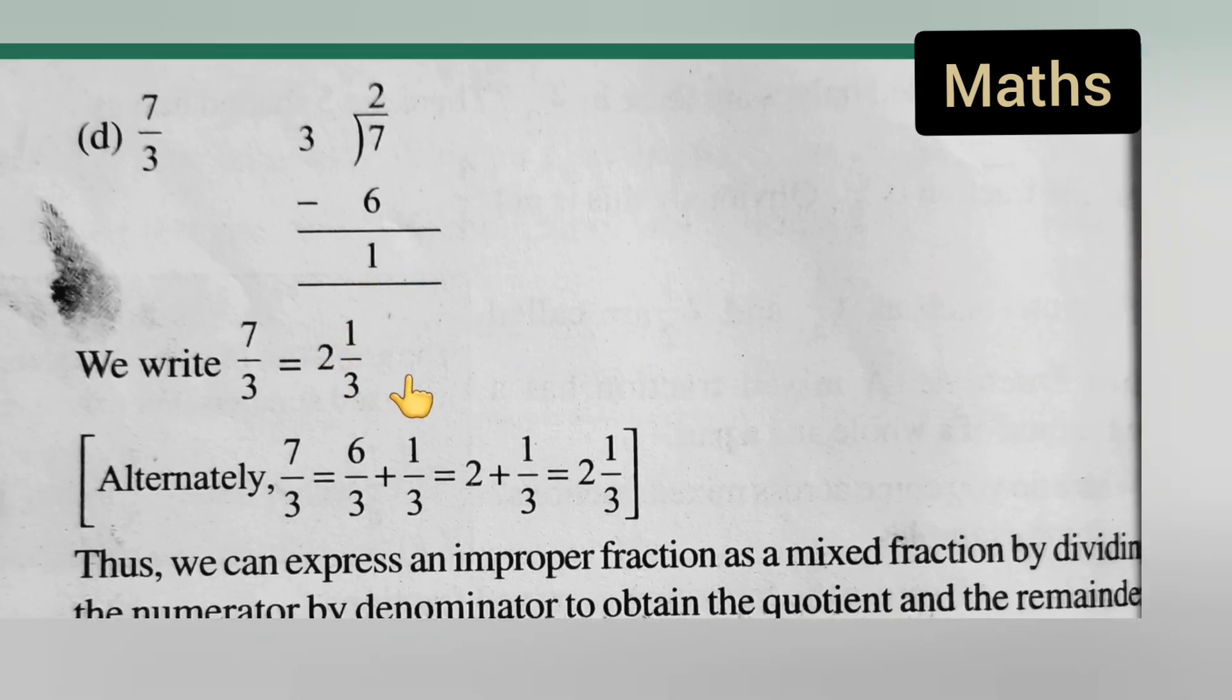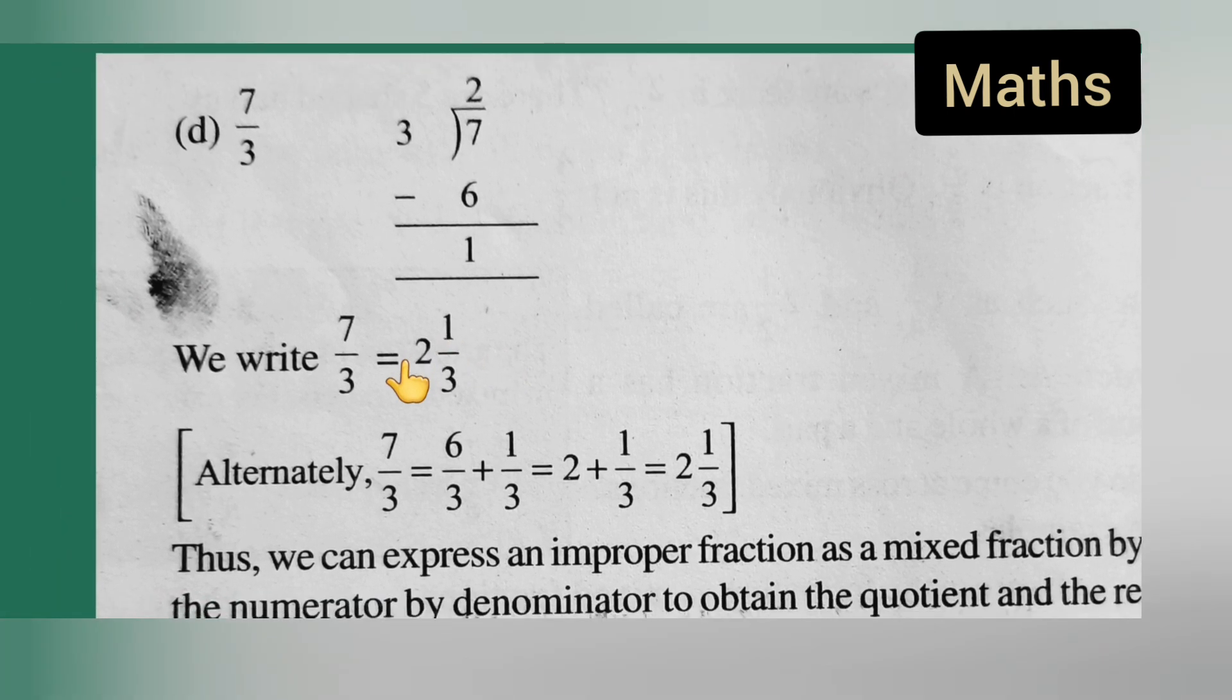Okay, you all have brought it into a mixed fraction now. Now let us see alternately. Alternately, what you all can do: 7 upon 3 is equal to 6 upon 3 plus 1 upon 3. So what you all are going to get is 2 plus 1 upon 3, right, which is equal to 2 and 1 upon 3.